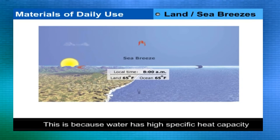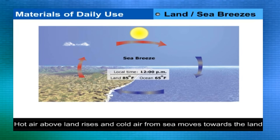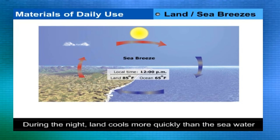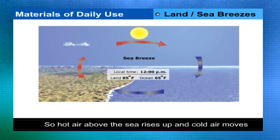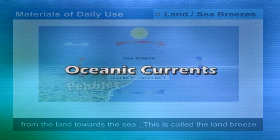Water has high specific heat capacity while sand and earth have low specific heat capacities. Hot air above the land rises and cold air from the sea moves toward the land — this is the sea breeze. During night, land cools faster than the sea, so hot air above the sea rises and cold air moves from land toward the sea — this is the land breeze.